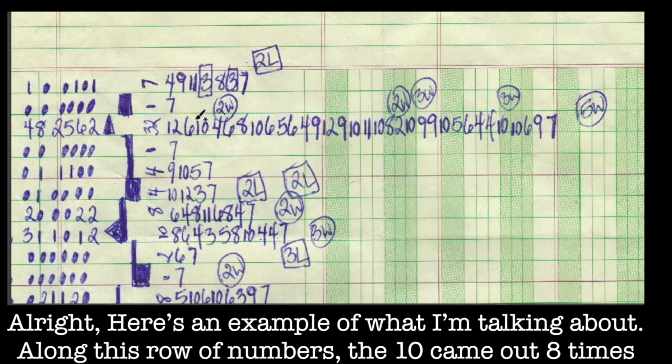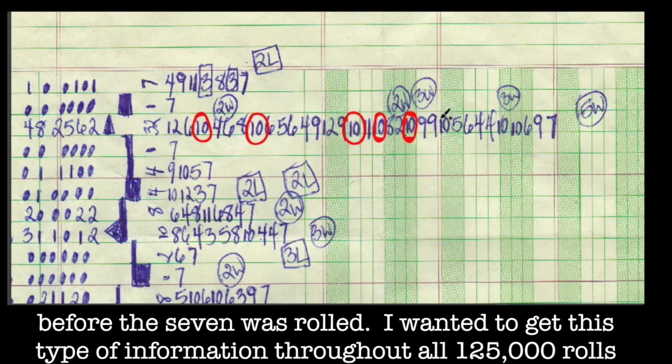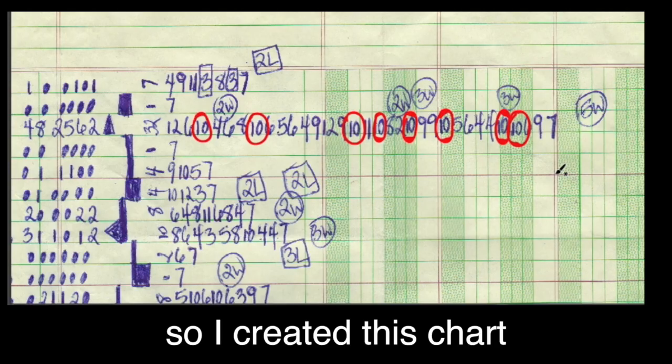Along this row of numbers, the ten came out eight times before the seven was rolled. I wanted to get this type of information throughout all 125,000 rolls, so I created this chart here.